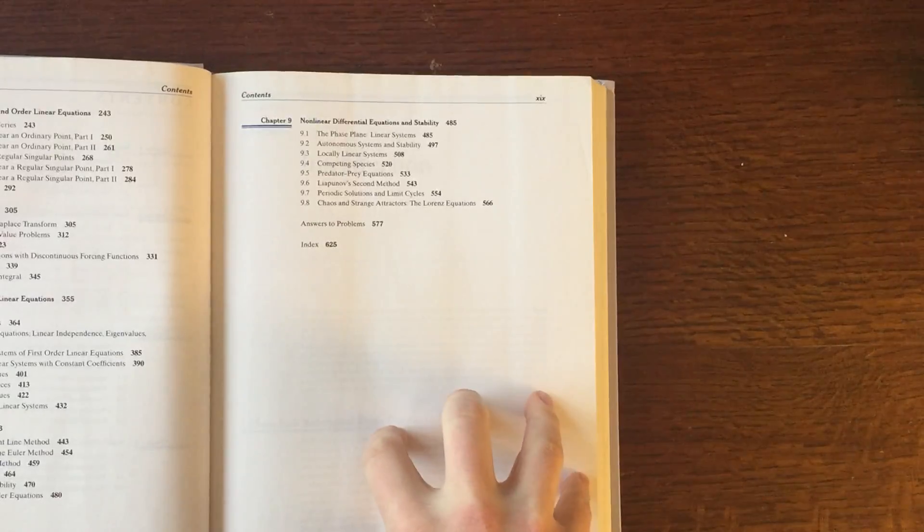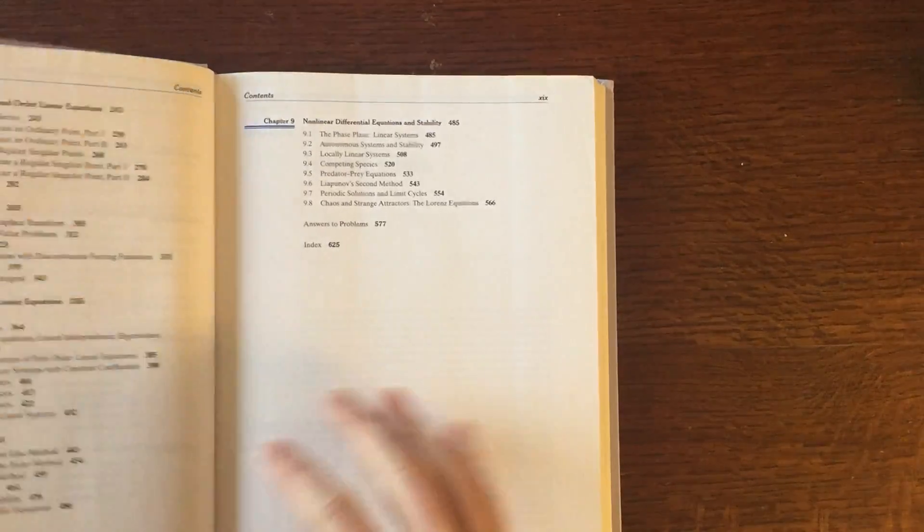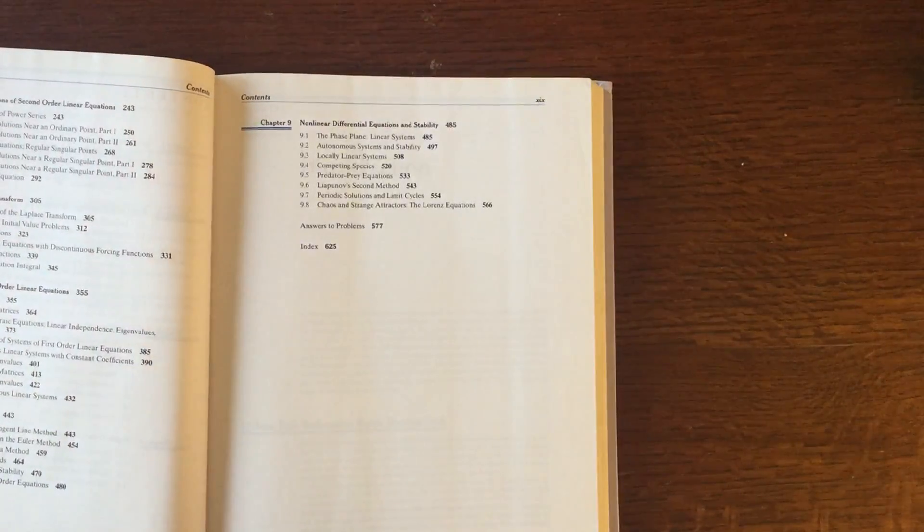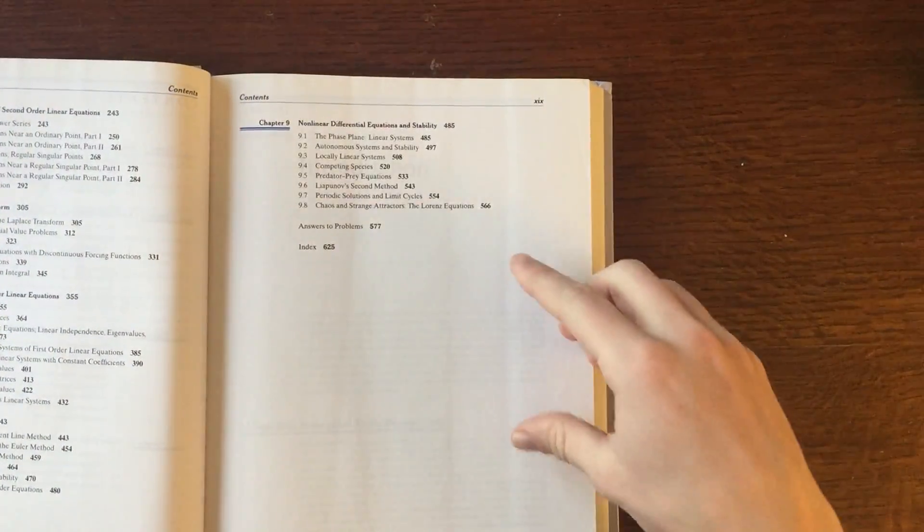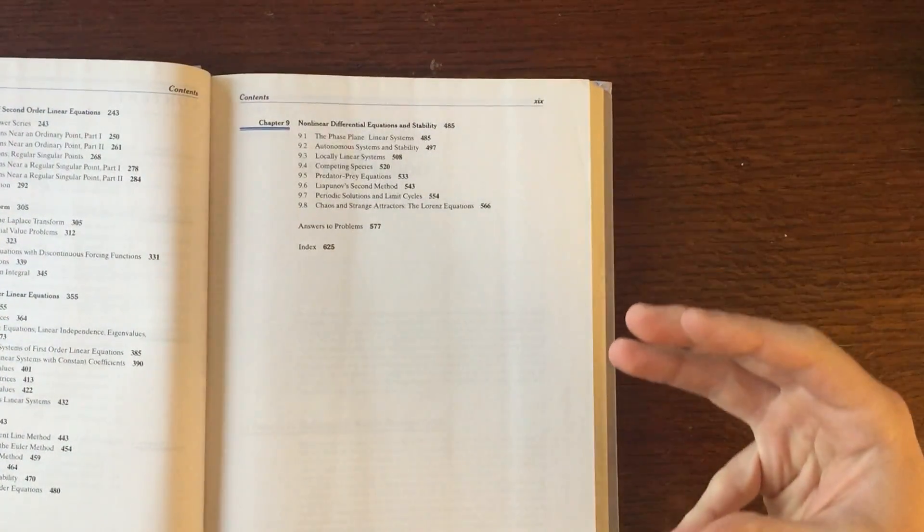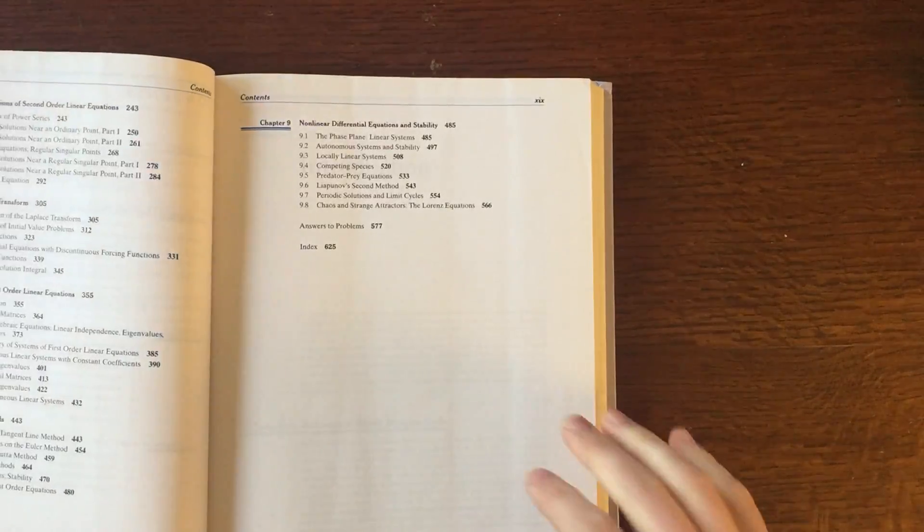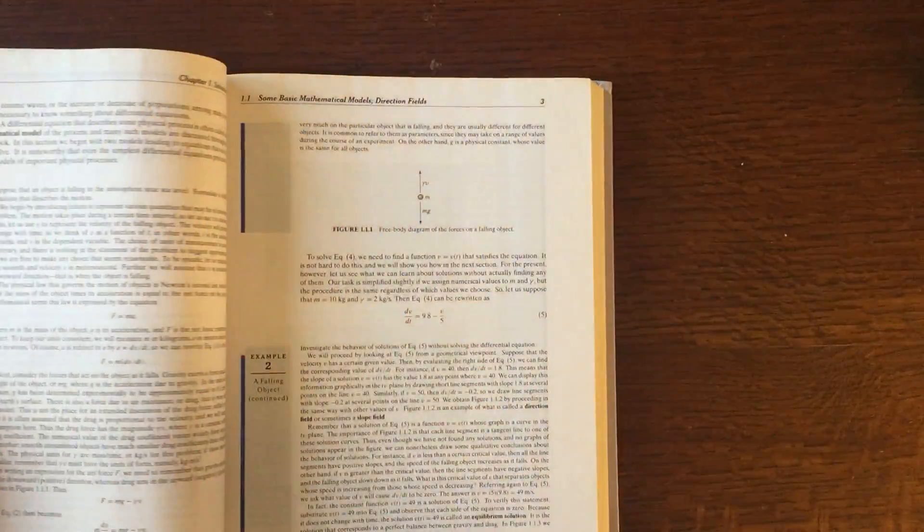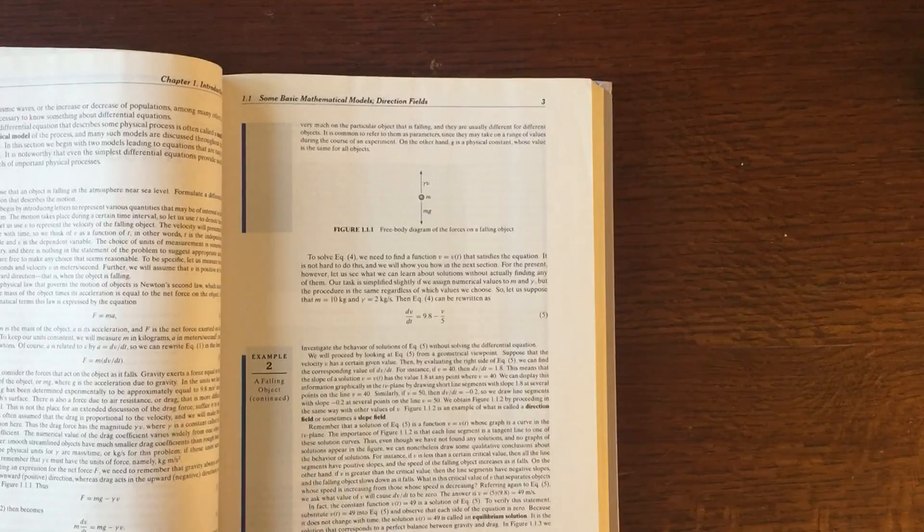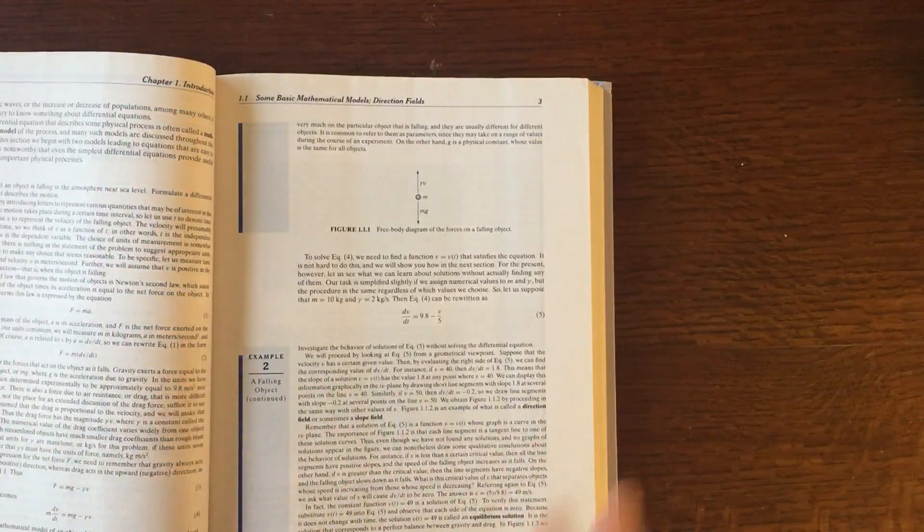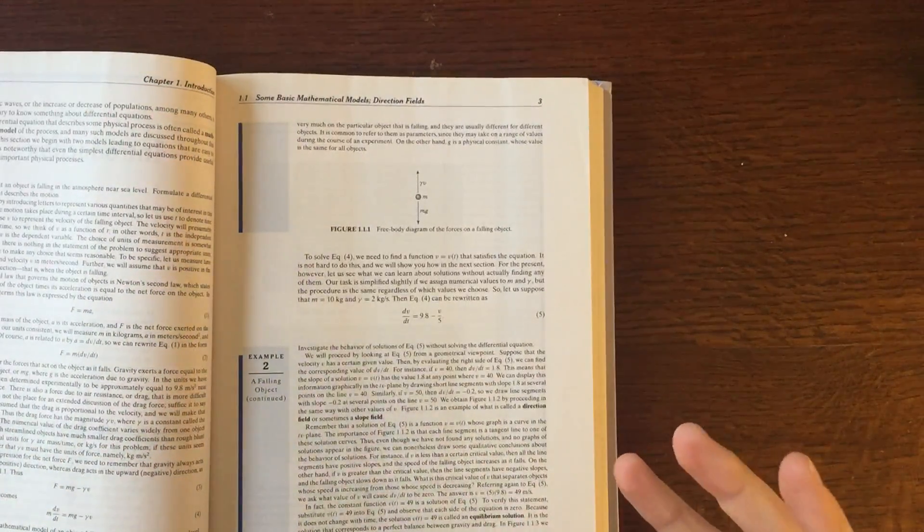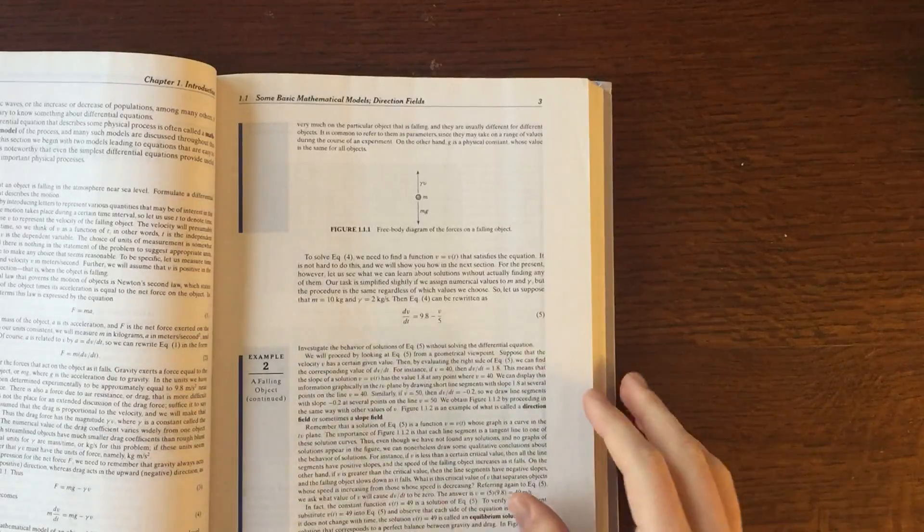The thing that I don't like about this book is that the newer edition, I know they at least have the 10th edition, maybe they're on another edition, but it has a chapter on partial differential equations. And probably when you take the class, you'll talk a little bit about partial differential equations. You'll want at least the 10th edition of this book. So keep that in mind. I wouldn't buy the 9th edition unless it's dirt cheap. If you can, spring for the 10th edition.